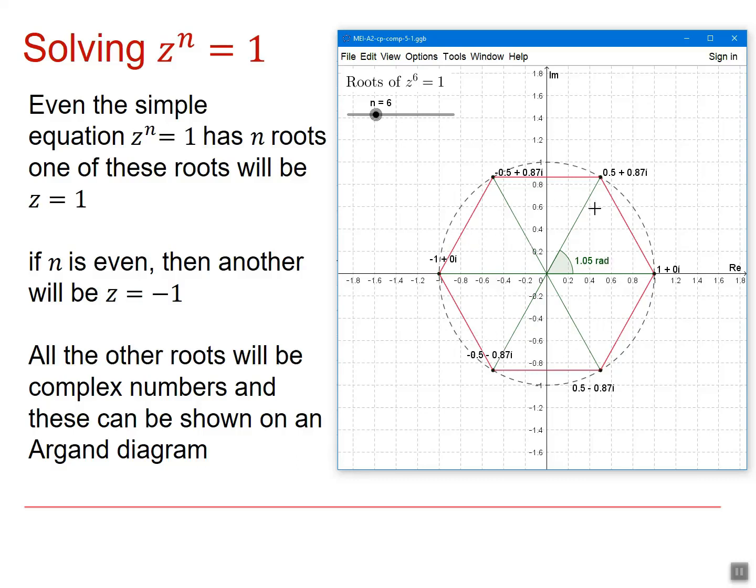Let's have a look at this plot here and see what happens as we change the power of n. If I go back to n equals 2, you'll see I get two roots, one at 1 and one at minus 1, 3, 4.